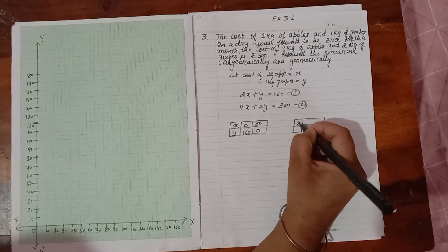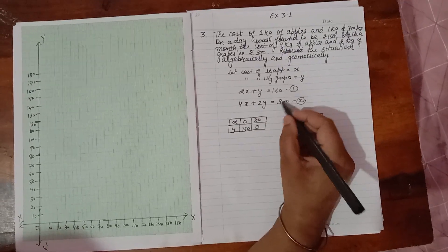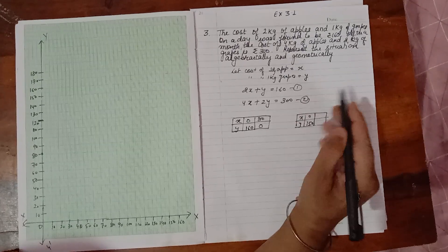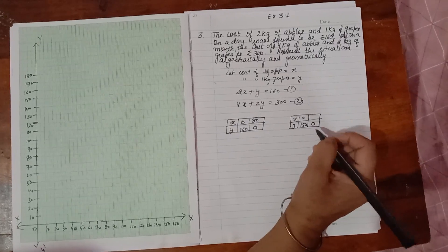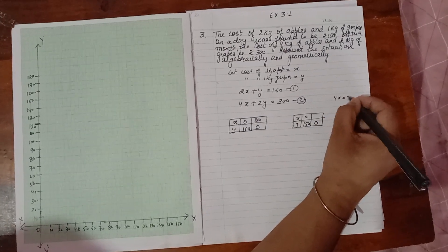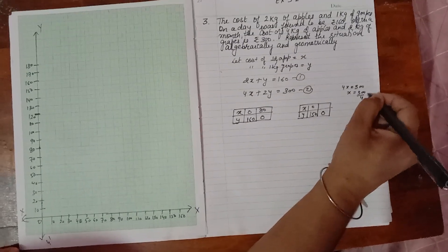X value and Y value. If X is 0, Y will be 300 over 2, that is 150. If Y is 0, then 4X equals 300, so X will be 300 over 4, that is 75.